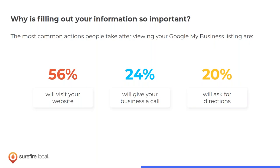If you have a well-functioning Google My Business page with all the appropriate fields filled out, you can see up to a 56% jump in website visits and a 24% jump in calls to your business — all by spending less than an hour setting it up properly. The 'asking for directions' feature also serves as a form of trust verification: people want to confirm you're located where you claim to be.